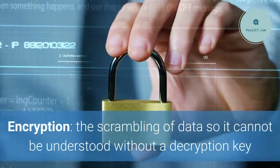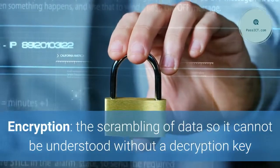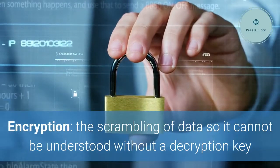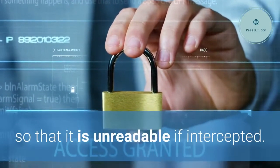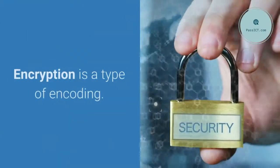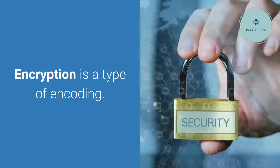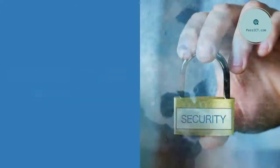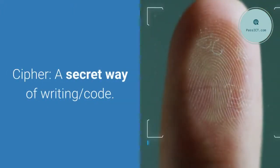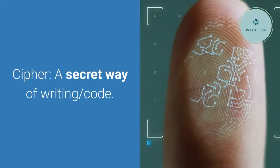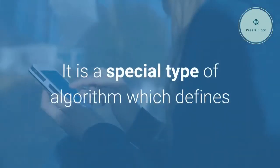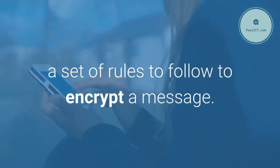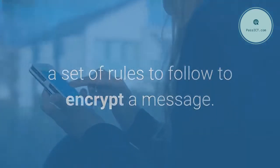Encryption: the scrambling of data so it cannot be understood without a decryption key, making it unreadable if intercepted. Encryption is a type of encoding. A cipher is a secret way of writing or code — it is a special type of algorithm which defines a set of rules to follow to encrypt a message.